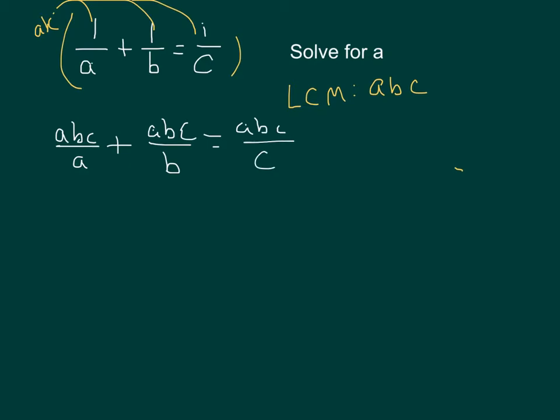So we put that LCM into the numerator, and now we cancel. What cancels in our first term is the A's, so those A's cancel out, and we're left with just BC plus.